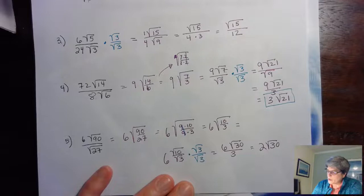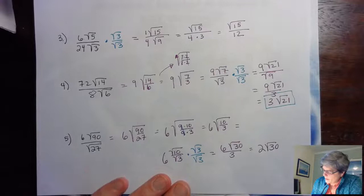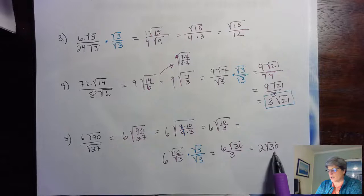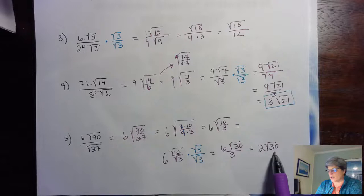Let's check whether 30 has any perfect square factors. It doesn't — it's 2 times 3 times 5, no perfect squares. So the final answer is 2 root 30. That's a combination of simplifying radicals with division and rationalizing the denominator.